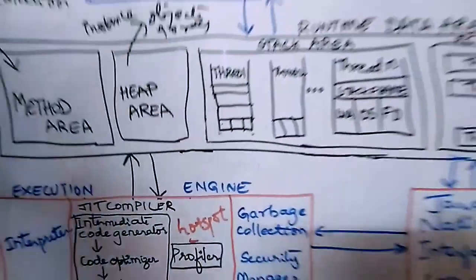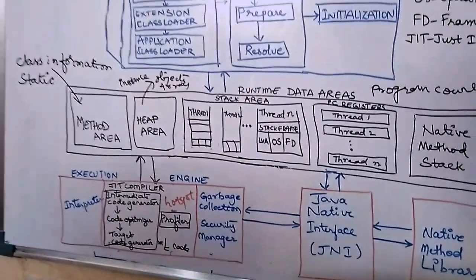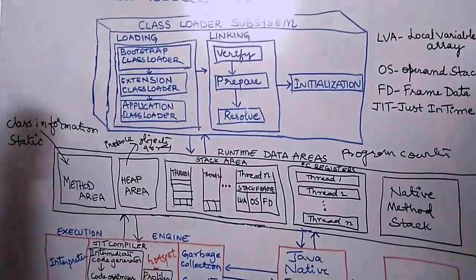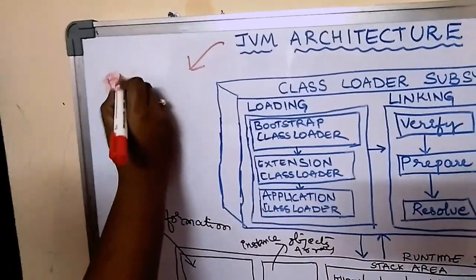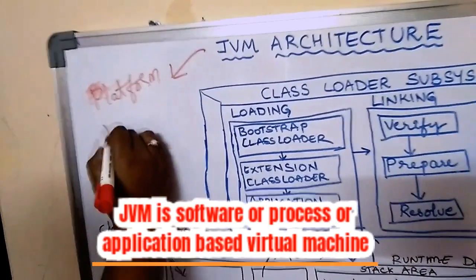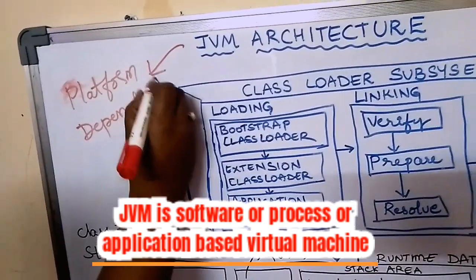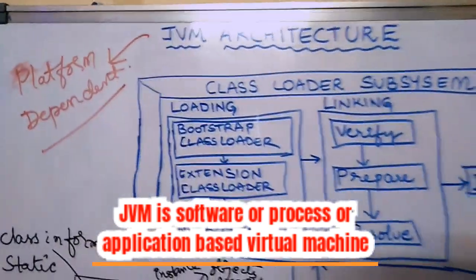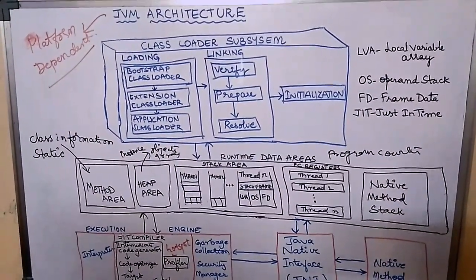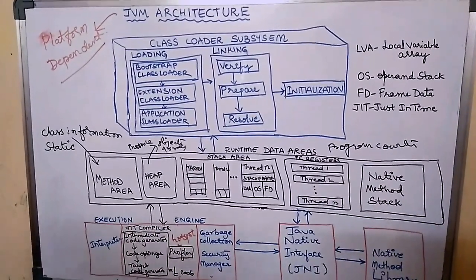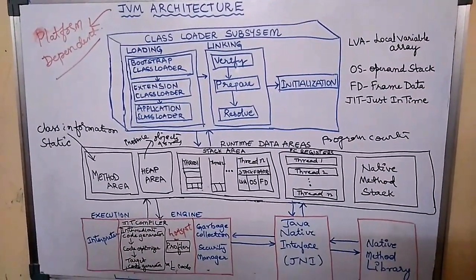This is all about the JVM architecture. One very important thing to remember is that JVM is platform dependent — if you want to run the code on Windows you need a JVM specific to Windows, and if you want to run it on Linux you need a JVM specific to Linux. If this video was helpful, watch the upcoming videos for lectures on Java. Happy learning!